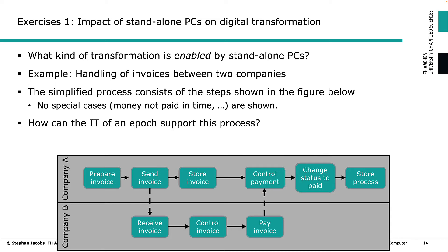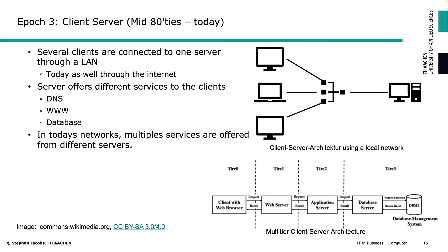Again: what are the impacts of PCs on digital transformation? Look at the invoice process and think about how PCs change the way the process runs. If you think about the limitations of standalone PCs, some things pop up immediately. For example, if you're in an office and need to print something, and your computer is not connected to any network printer, then each person has to have a printer directly connected to their own computer.